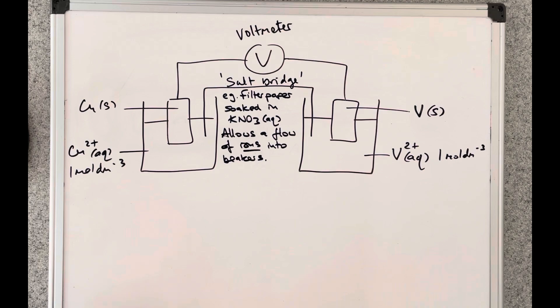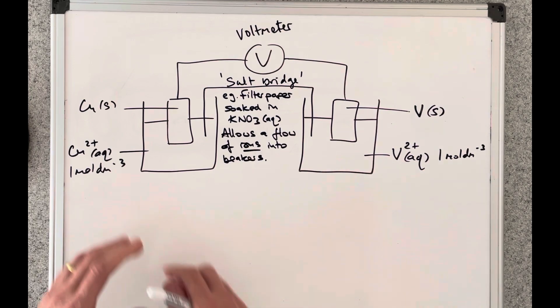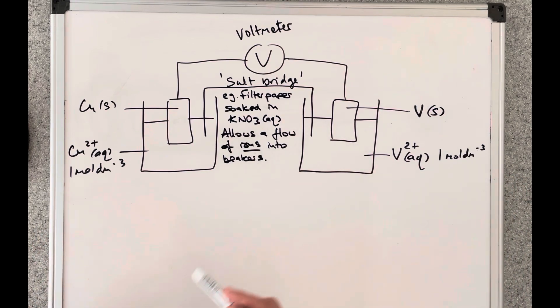So there's a diagram of what this cell would look like. I've chosen to put the copper, copper 2 plus half cell on the left and the vanadium, vanadium 2 plus on the right. It doesn't matter which way around they go. That's just the way I've chosen to do it.